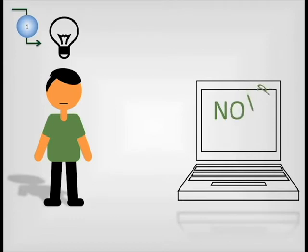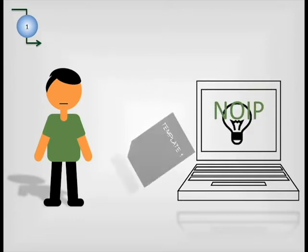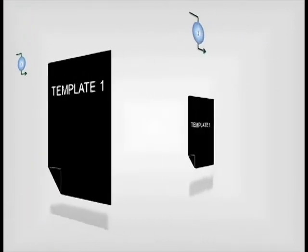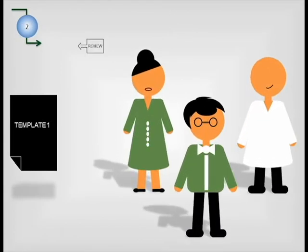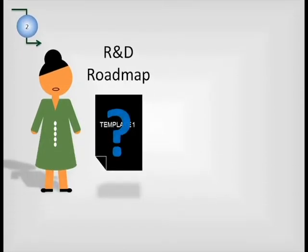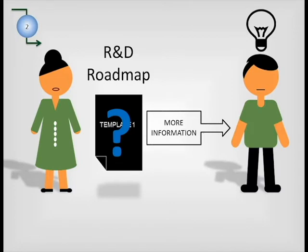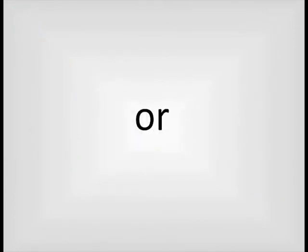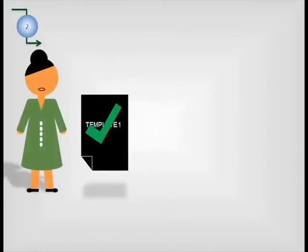Any Neugenia member registered in NOIP can submit an idea by using the so-called Template 1 form. The defined technical area and sub-area leaders then review and evaluate this idea and provide feedback to the proposer. They may consider the idea not fully fitting with their R&D roadmap and ask for more information, or approve to share it with all members.